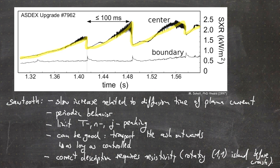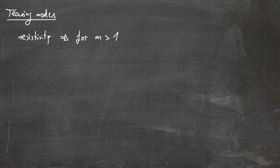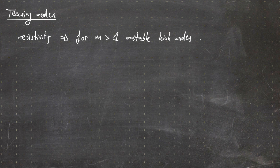All the physics details of this sawtooth behavior are not yet fully understood and remain subject of active research both in experiment and in simulations. Now, since we talked about finite resistivity, we can start to discuss tearing modes. If we have finite resistivity and apply the energy principle analysis, it yields that for mode numbers m larger than one, there are unstable kink modes.